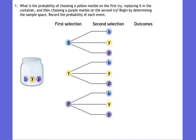So we're going to list all the possible outcomes. I could have picked up a blue first, put it back, and then what else could I have picked up? Another blue, a yellow, or a purple.